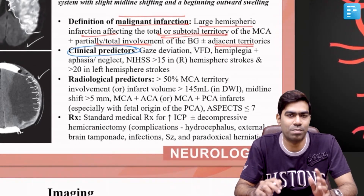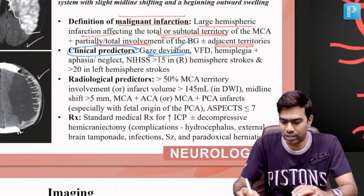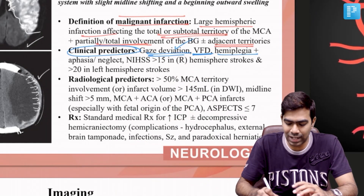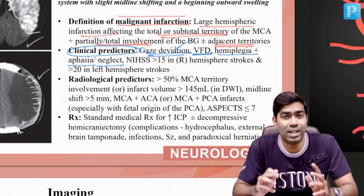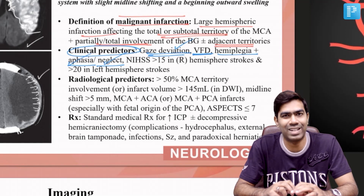The clinical predictors of malignant infarction or malignant cerebral edema: patients about to develop malignant cerebral edema typically have severe neurological deficits with a very high NIHSS score at presentation. Other predictors include forced gaze deviation — especially in non-dominant strokes — severe visual field defects, hemiplegia, and aphasia or neglect depending on stroke side. Dominant lesions produce aphasia; non-dominant lesions predominantly produce neglect.